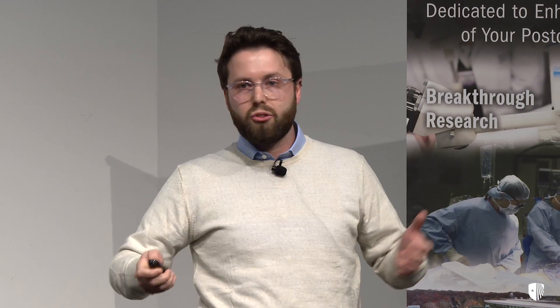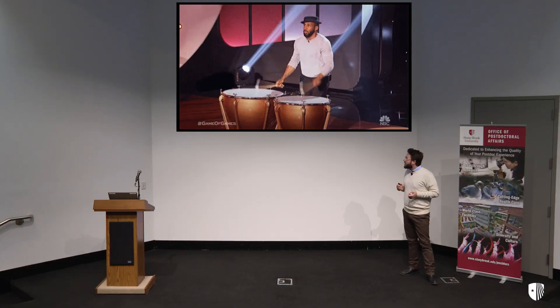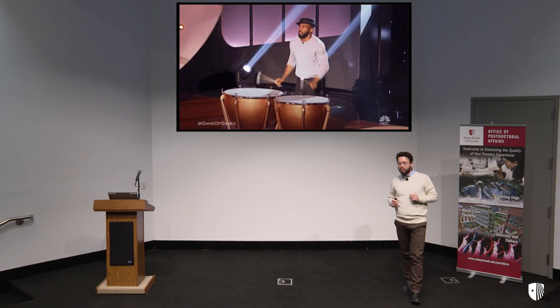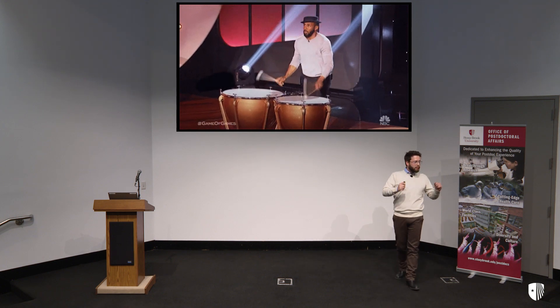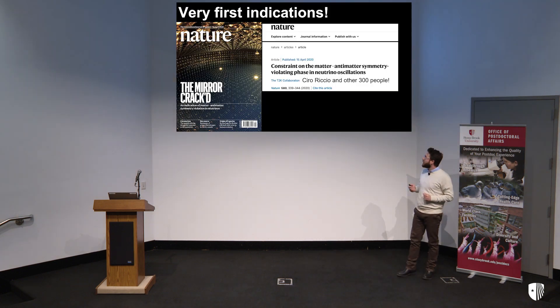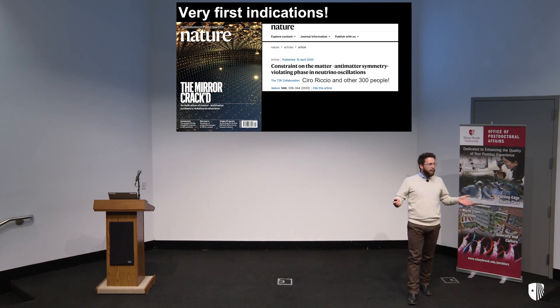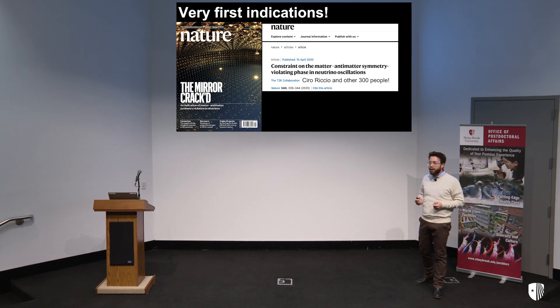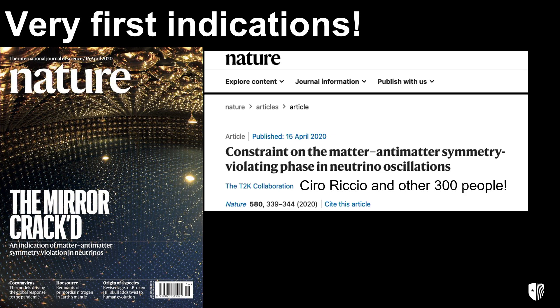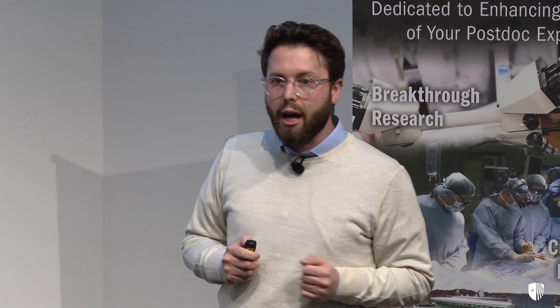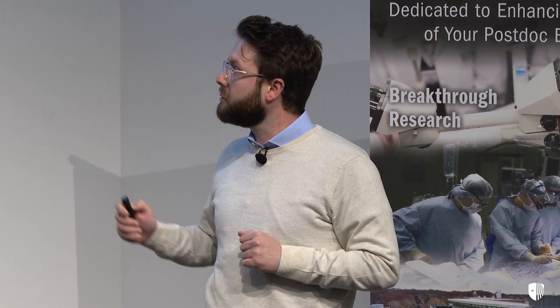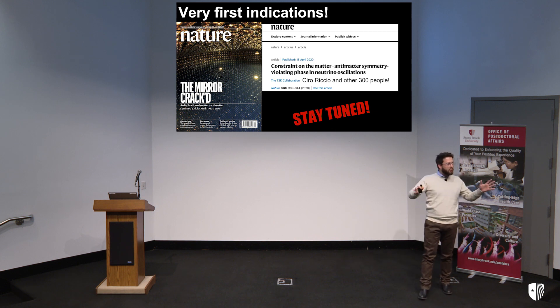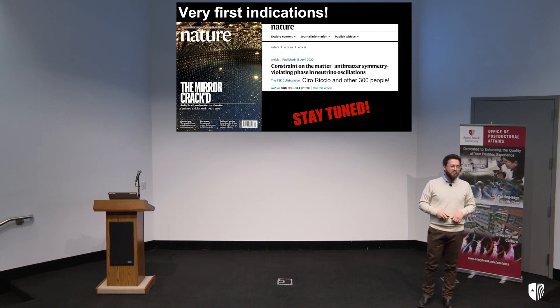T2K started operation in 2009, and after 11 years of activity, in 2020, myself and the other 300 people who work on T2K published what seems to be the very first indication of matter-antimatter asymmetry between neutrino oscillations. More investigation is needed to make sure that it's really there and that it can shed light on the matter-antimatter asymmetry in the Universe. So stay tuned for about another 10 years for future announcements. Thank you.